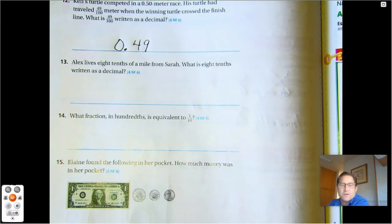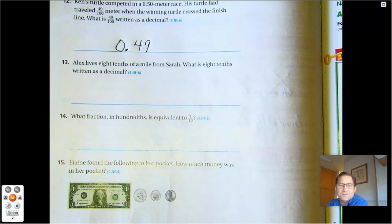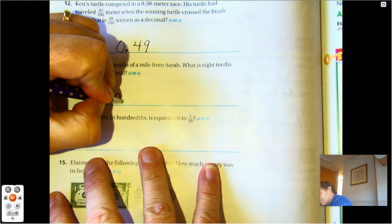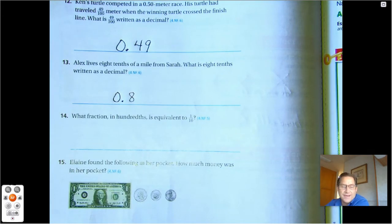Alex lives eight tenths of a mile from Sarah. What is eight tenths written as a decimal? 0.8.